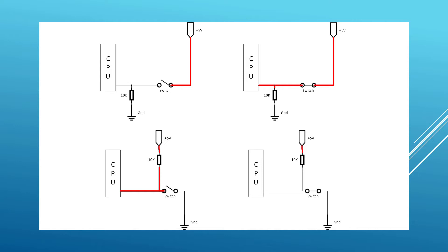In the bottom left, we have a pin tied to 5 volts through the resistor and the switch tied to ground. When the switch closes, it then brings the pin potential to ground, and again the CPU can take action on this.